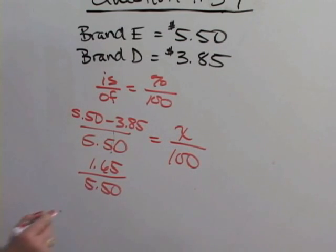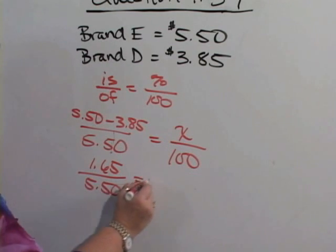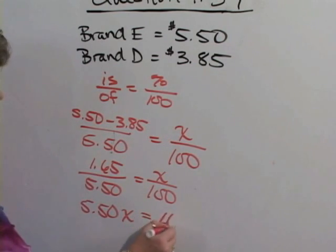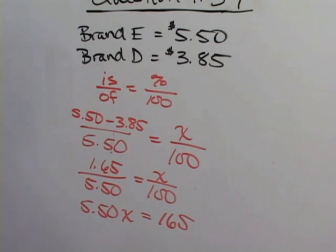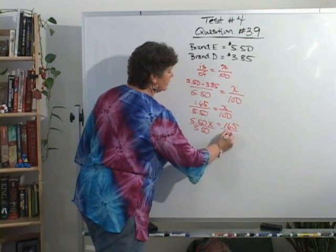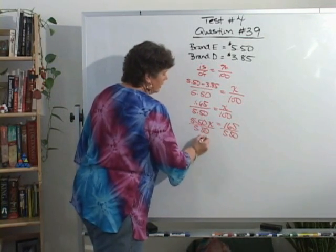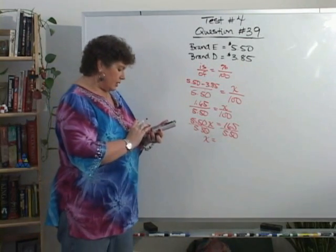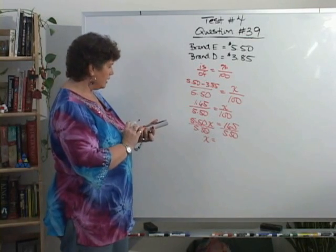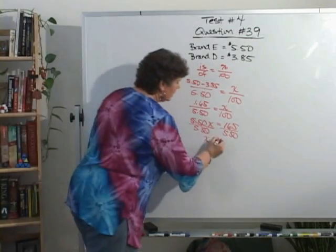$1.65 out of the original brand E cost equals X over 100. This is a cross multiply and divide situation. $5.50 times X is $5.50X. $1.65 times 100 is $165. Divide both sides by $5.50, and you end up with X equals $165 divided by $5.50 equals 30.